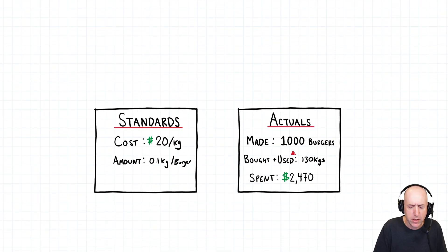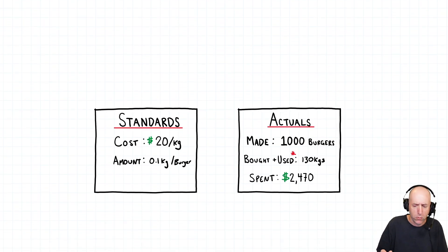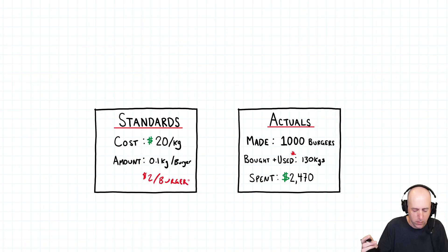And so I said, OK, well, let's, you've given me some numbers and we'll break it down. This is how an accountant would think of the numbers you gave us. On the left, I've got the standard like the supposed to. It's supposed to cost twenty dollars per kilogram of beef. And it's supposed to take point one kilograms per burger. And of course, twenty times point one is it's supposed to cost, as he said, twenty times point one is two dollars per burger. That's what it's supposed to be. The actuals, though, he made a thousand burgers.